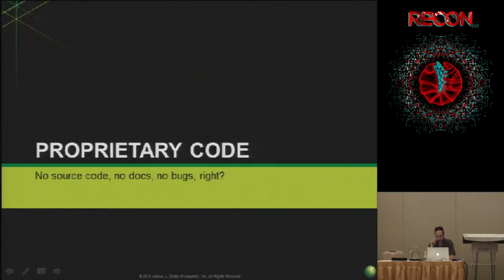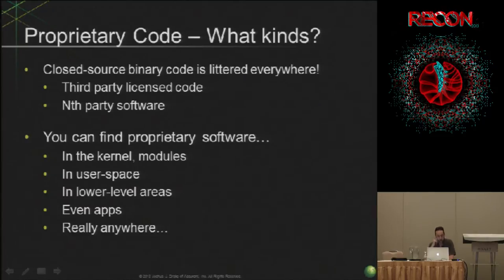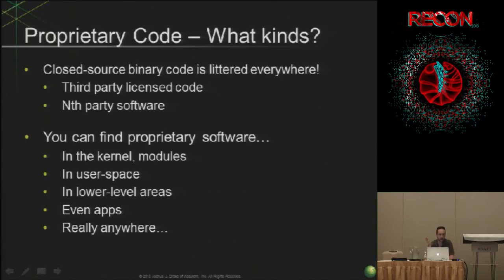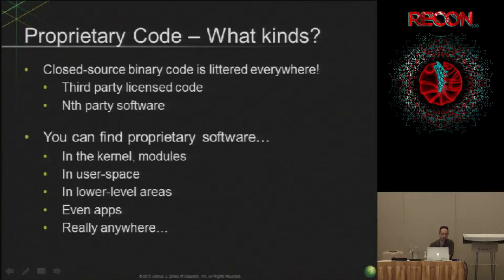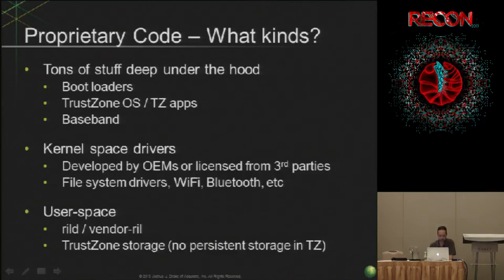Let's get into what proprietary code there is. When you look around an Android device you think everything's going to have source, but really you'll find stuff all over the place varying from device to device. You could end up with custom kernel modules, completely new implementations of entire protocols in user land, and lots of stuff in the lower-level areas — bootloaders are all closed, and everything below the Linux kernel is pretty much closed source. Even in apps, you download something from the Play Store and it's got a 12-meg ARM binary library inside it.